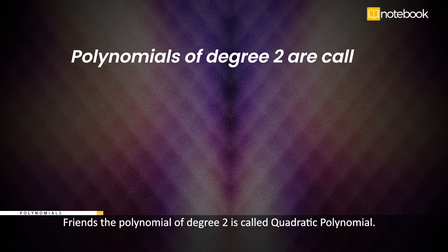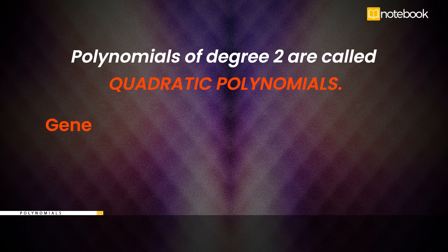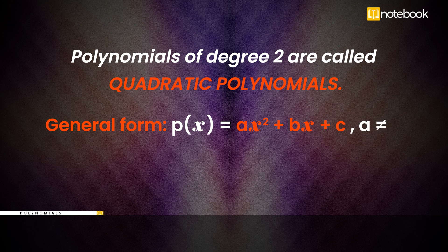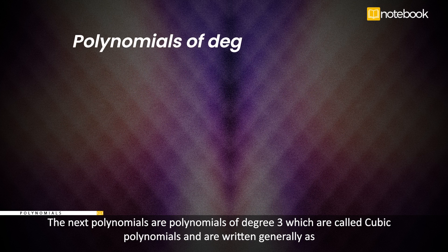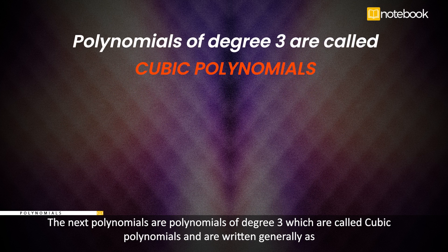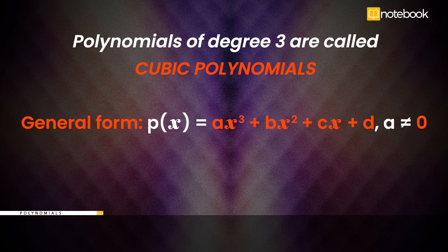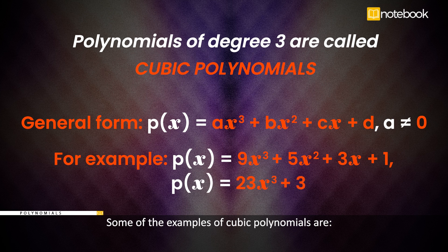A polynomial of degree 2 is called a quadratic polynomial. Its general form is p(x) = ax² + bx + c, where a ≠ 0. For example, p(x) = 3x² + 4x + 2 and p(x) = 5x² + 3 are quadratic polynomials. Polynomials of degree 3 are called cubic polynomials and are written generally as p(x) = ax³ + bx² + cx + d, where a ≠ 0. Examples include p(x) = 9x³ + 5x² + 3x + 1 and p(x) = 23x³ + 3.